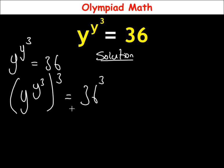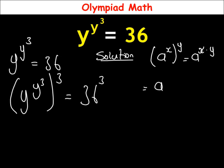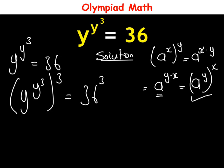At this junction we're going to bring in one identity: if you have a raised to power x, power of y, this is equal to a raised to power x times y. This can also be written as a raised to power y times x, which equals a raised to power y power of x.